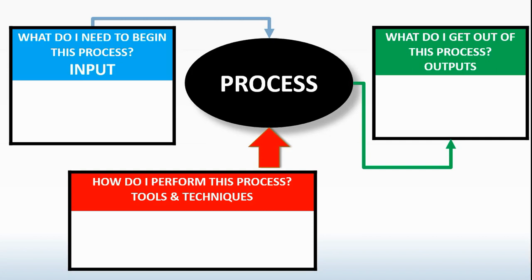Then you've got the blue box: what do I need to begin this process? That's the input. What do I get out of this process? Outputs. And how do I perform this process? Tools and techniques. As you encounter a process, you need to ask yourself those questions. If you're not able to define what you need to begin the process, what you do to perform it, or what you get out of it, that's a red flag — it means you need to study more.